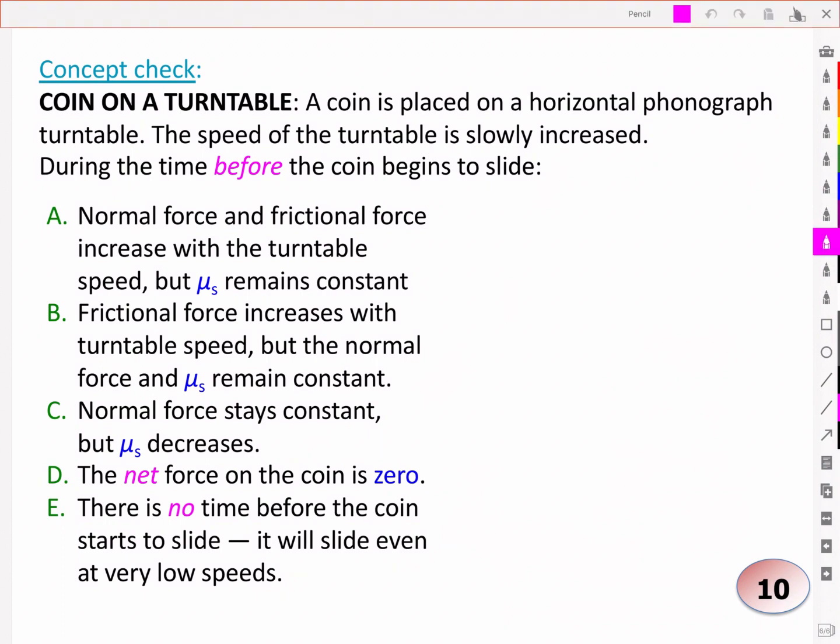Okay, let's take a look. So A says the normal force and frictional force increase with the turntable speed. There's nothing there that should increase the normal force. You have the acceleration of gravity acting downwards, and a normal force of the contact force pushing upwards. So it's not A. The frictional force increases with turntable speed, but the normal force and mu s remain constant. The normal force stays constant, but mu s decreases. Well the materials aren't changing, the surfaces aren't changing, and so mu s depends upon the materials, and so that one's not true.